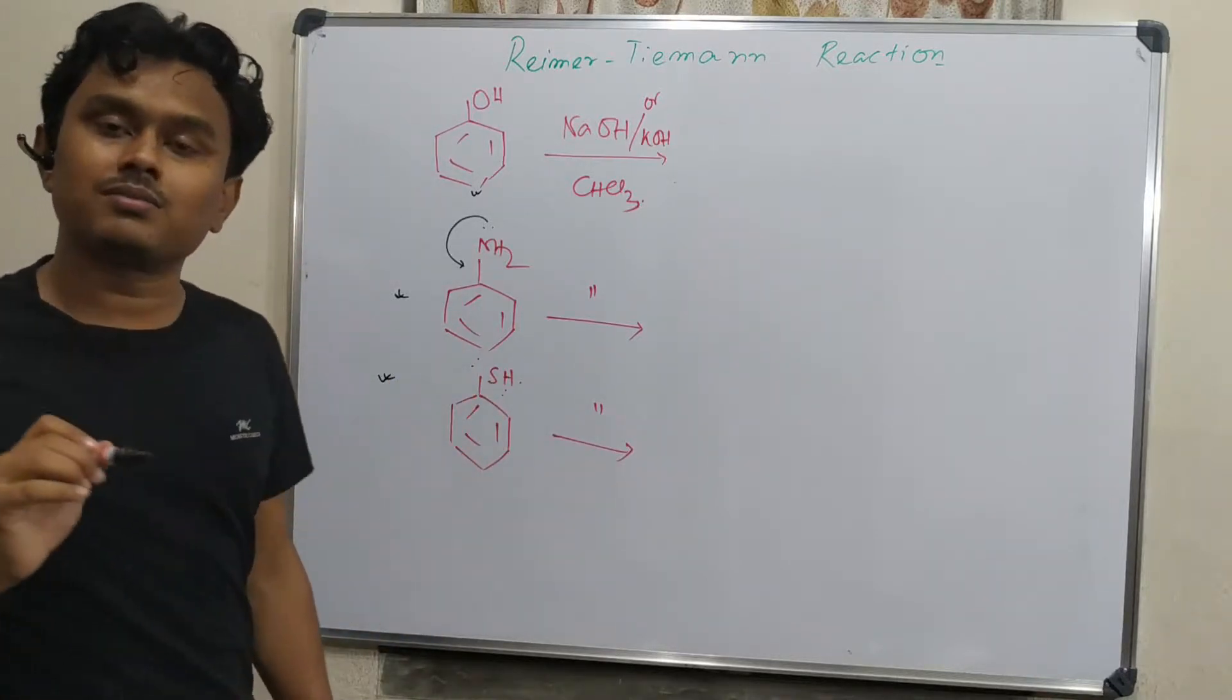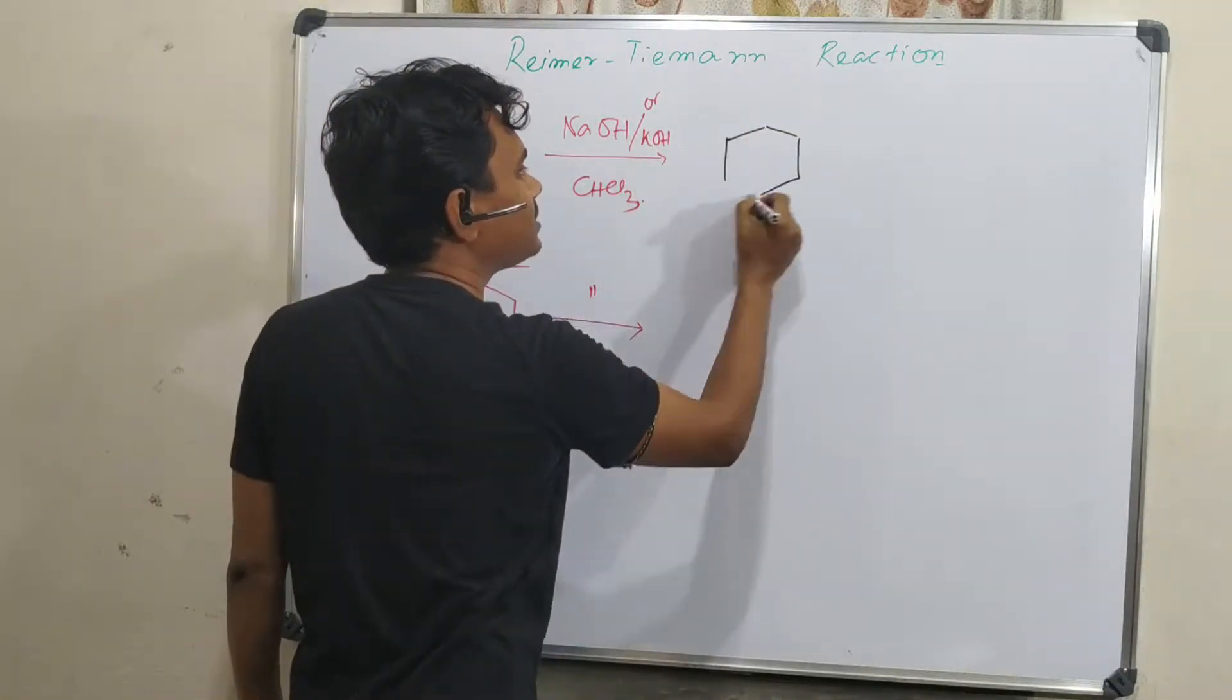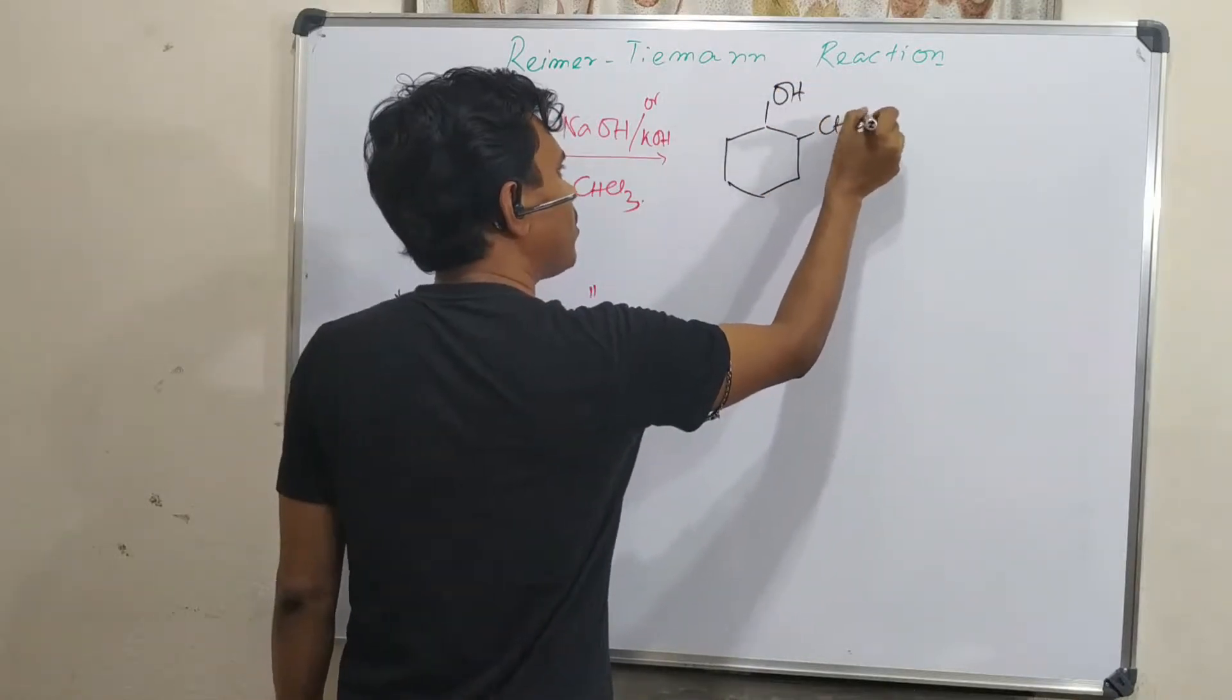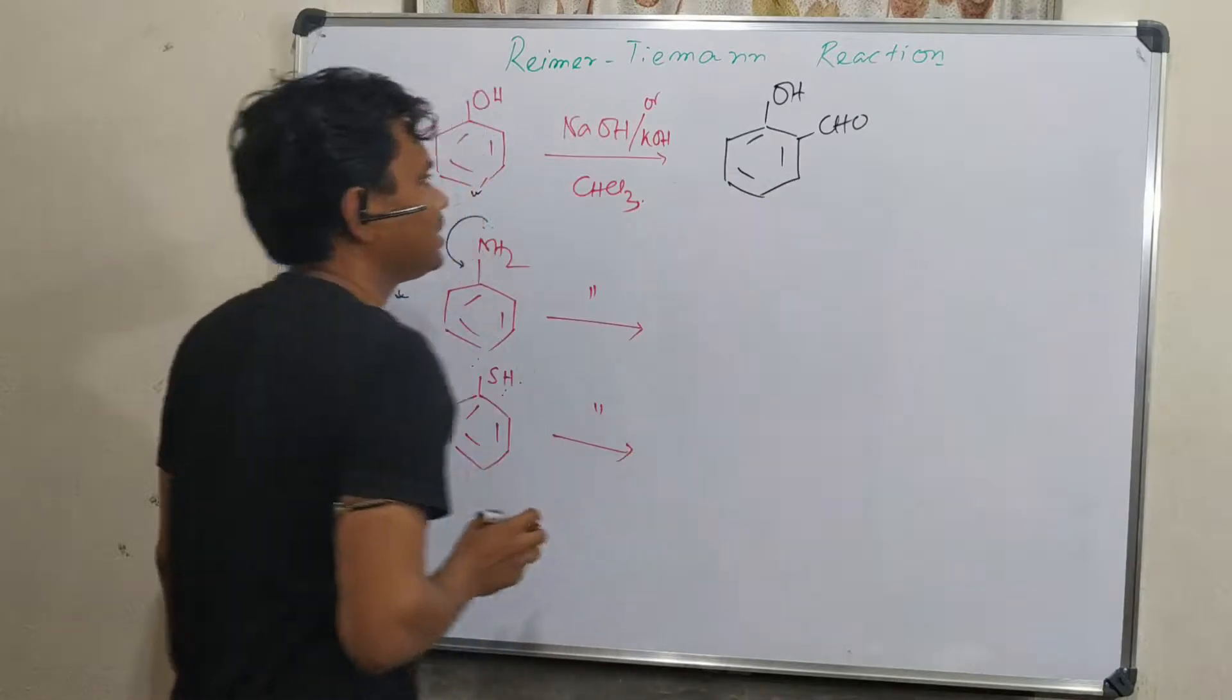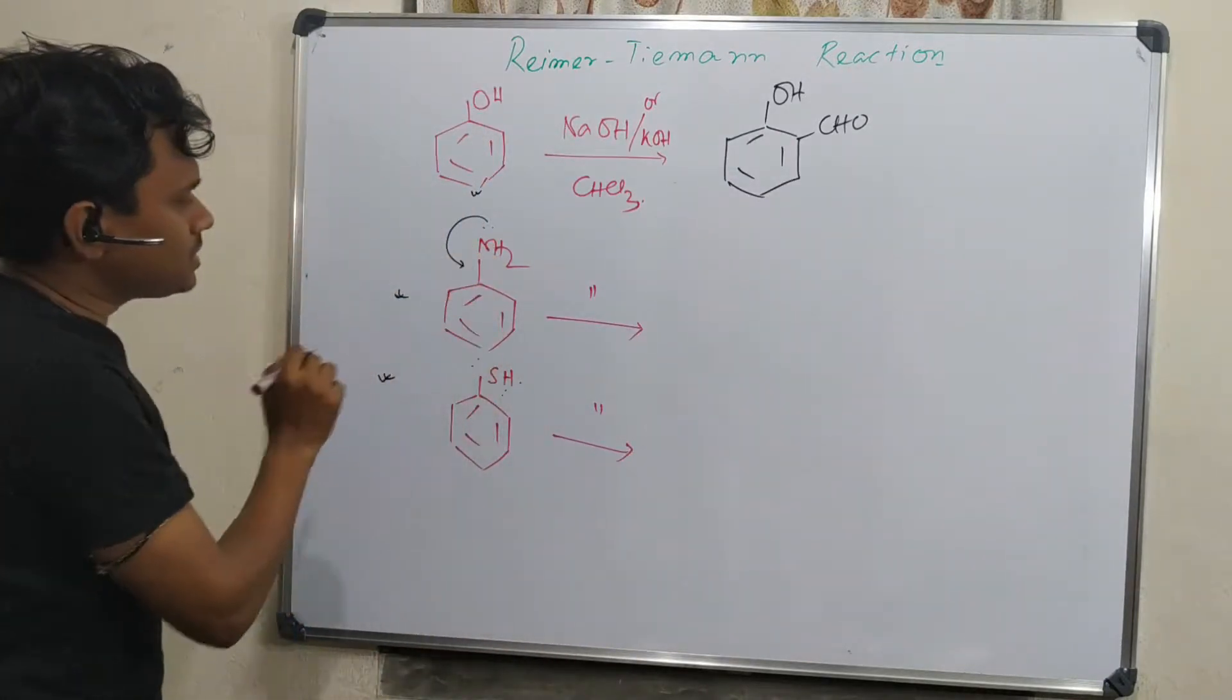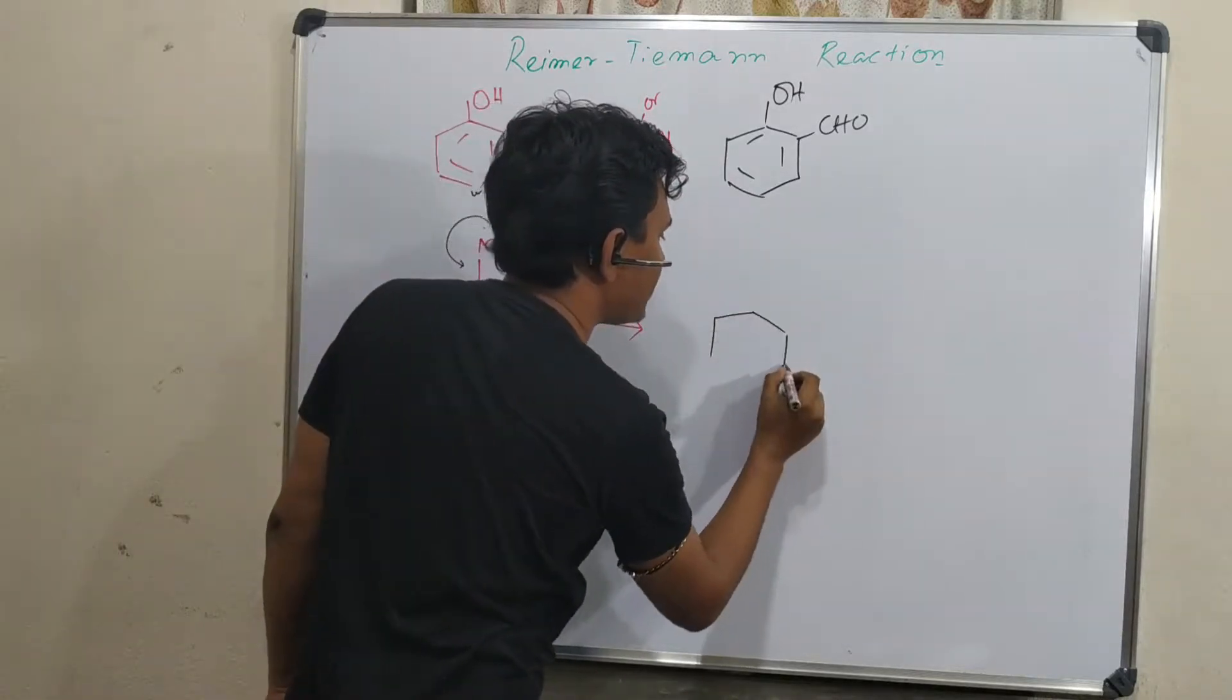Actually the answer is no. Here the product is, we know, salicylate - means the major product CHO, ortho-hydroxybenzaldehyde. But here, this reaction will produce isocyanate.